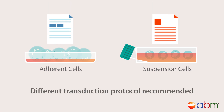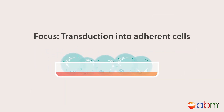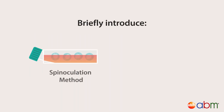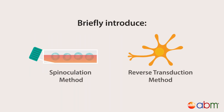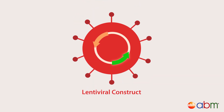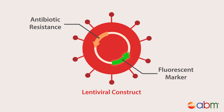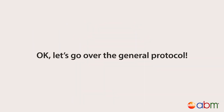Depending on the cell type you are working with, a different transduction protocol is recommended. Today we will mainly focus on transduction into adherent cells, and briefly introduce the spinoculation method and the reverse transduction method — two methods that tackle suspension cells and difficult-to-transduce cells. Before you start, ensure your lentiviral construct delivers antibiotic resistance or expresses a fluorescent marker, which will enable you to isolate your successfully infected cells.